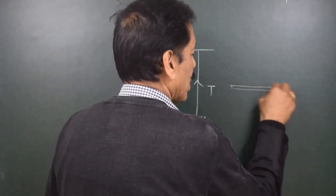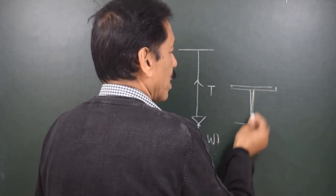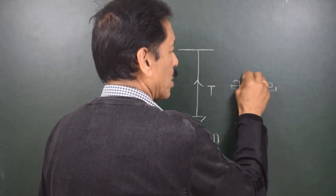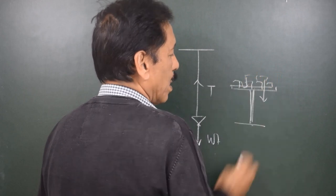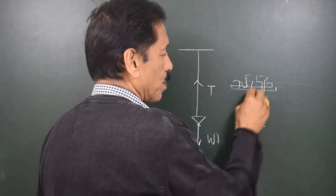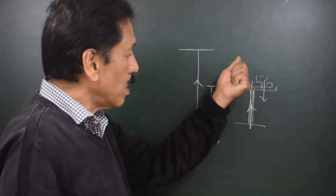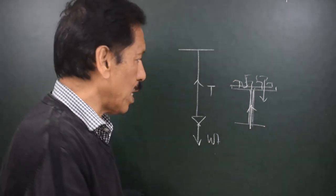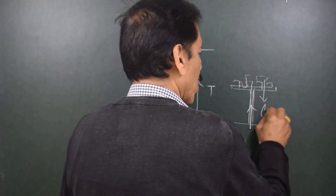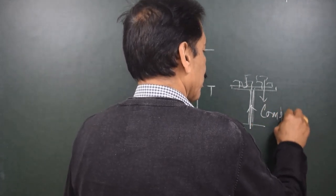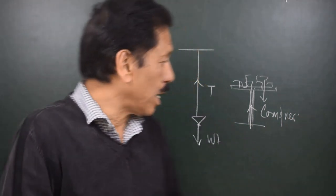Suppose we have a table and imagine there is a single support. If you place some weights on the table, there is a downward force acting along the support and a reaction acting upwards. Once again, the two forces are equal and acting in one line. This will give rise to compressive forces. So accordingly we have tensile stress and compressive stress.